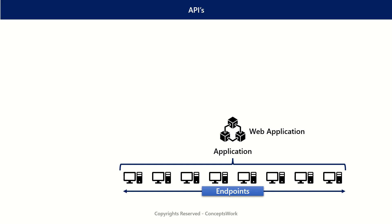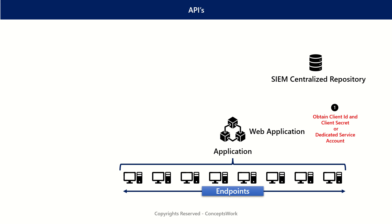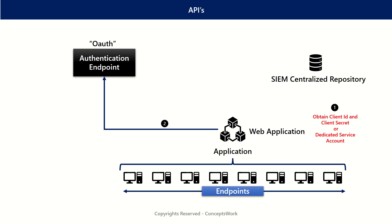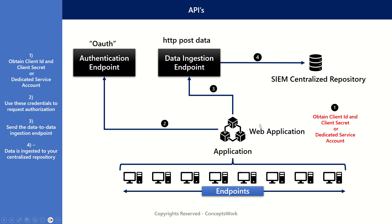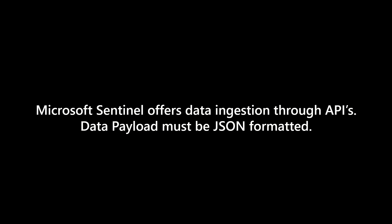Now let's talk about the third one, which is data ingestion through APIs. Imagine you have developed a web application and want to ingest all data from your application to a centralized repository. If you are using a capable SIEM solution, they will offer you data ingestion through APIs. All you need is a client ID and client secret or a dedicated service account. Once you have these details, you send the authorization request to your SIEM's authentication endpoint and then post the actual payload to the data ingestion endpoint, from where data will be ingested to your SIEM's centralized repository. In Microsoft Sentinel, the only condition is that the data payload must be JSON formatted.